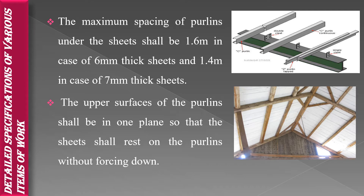The spacing of purlin under the sheets: if the sheets are 6 mm thick, the spacing of purlin under the sheet should be 1.6 meters. If the sheets are 7 mm thick, the spacing should be 1.4 meters.